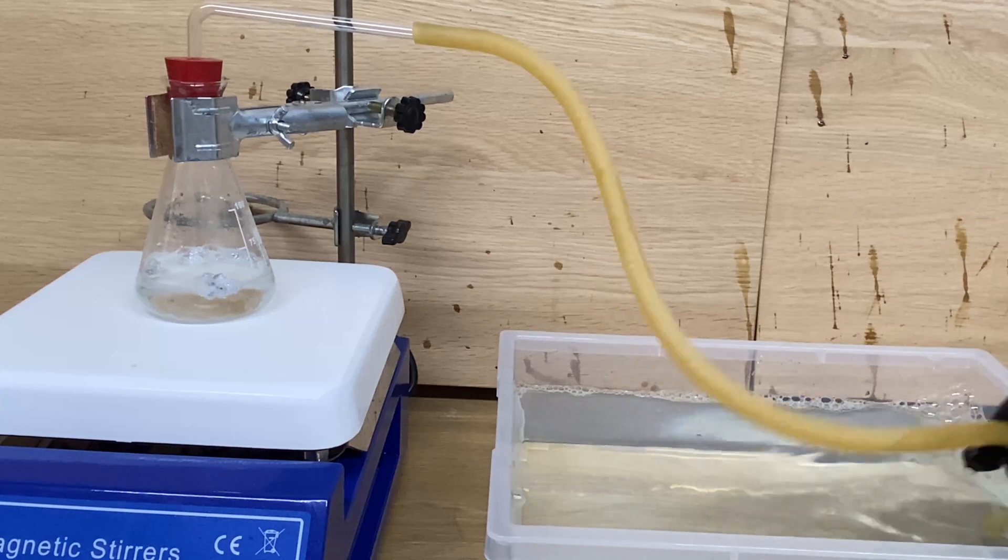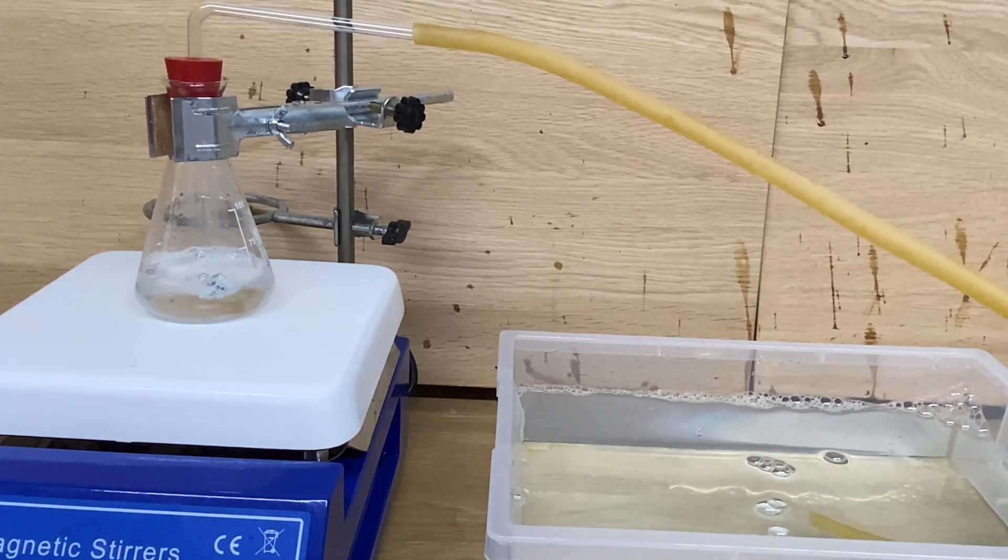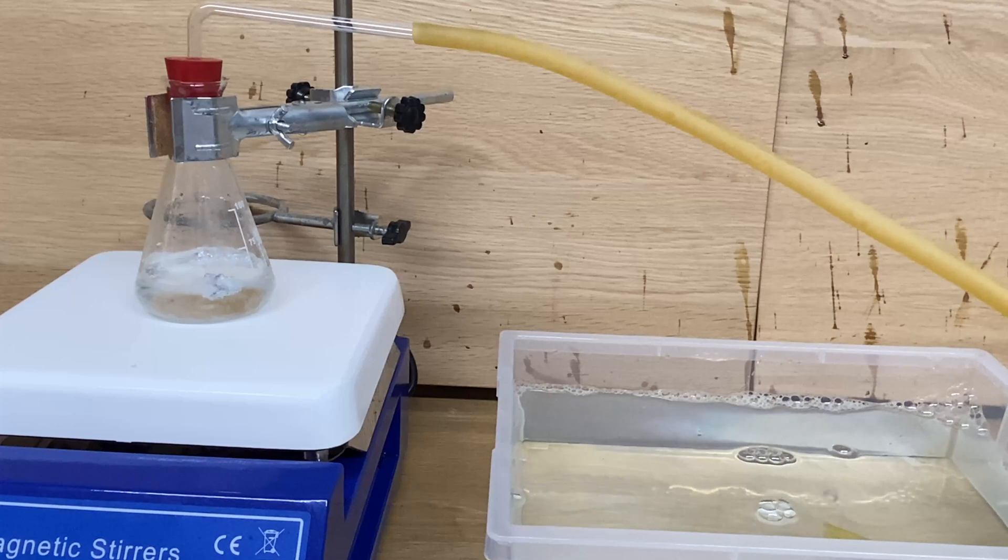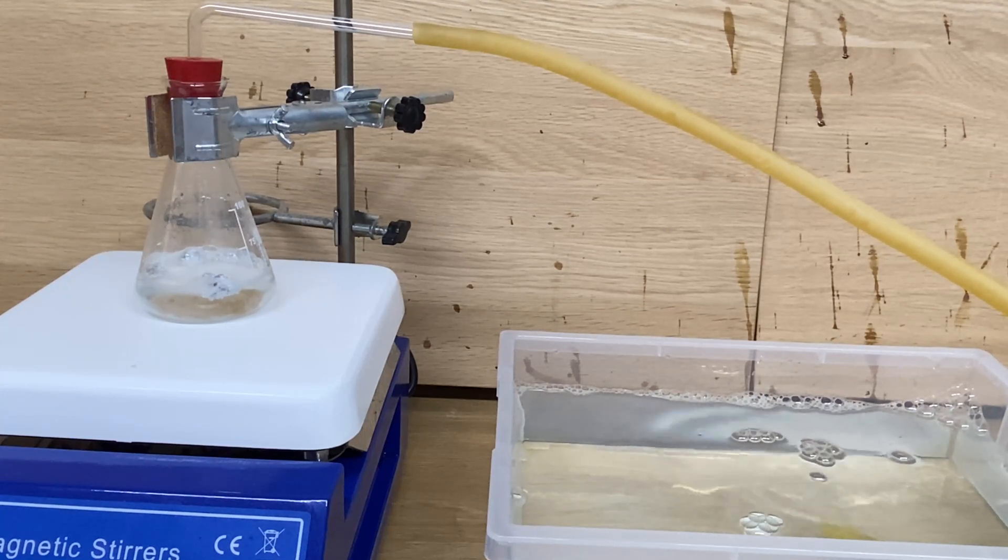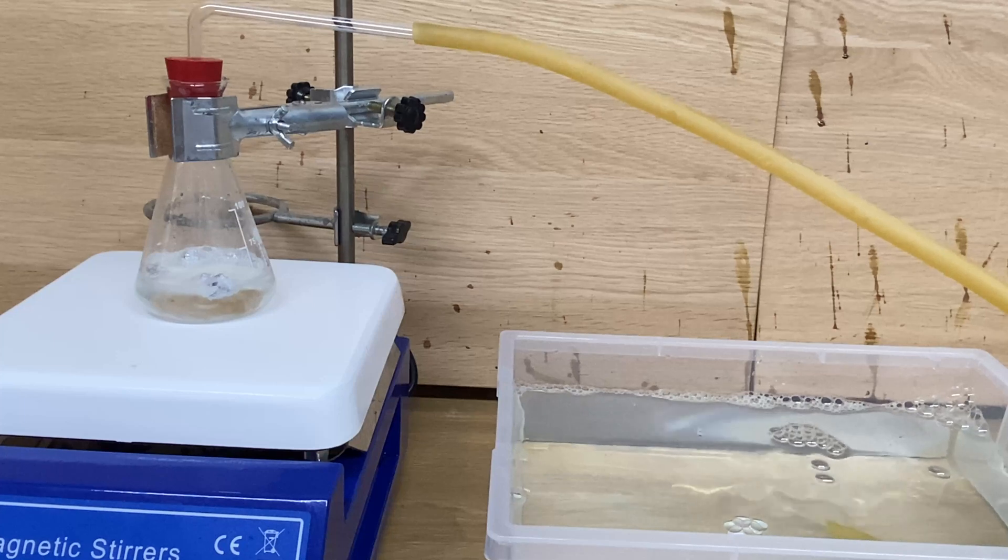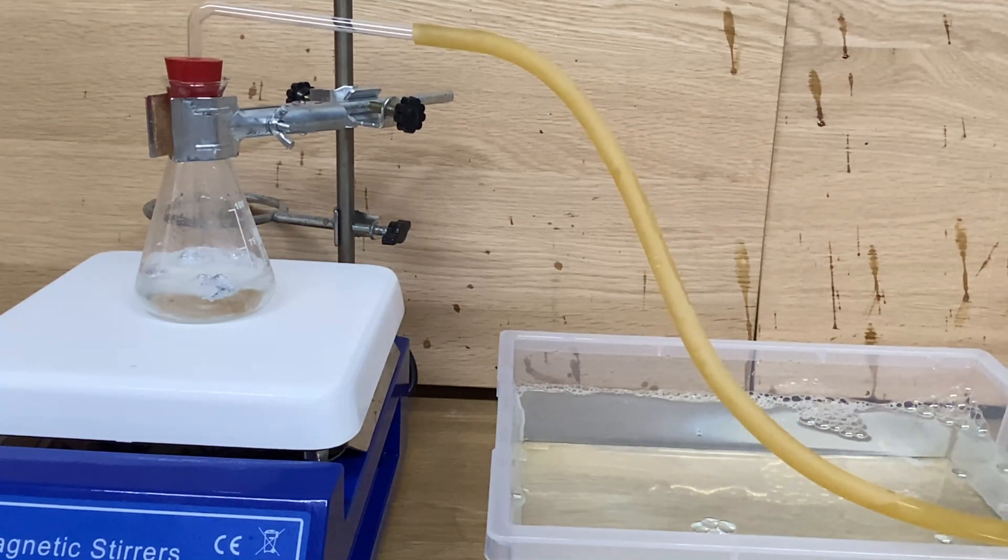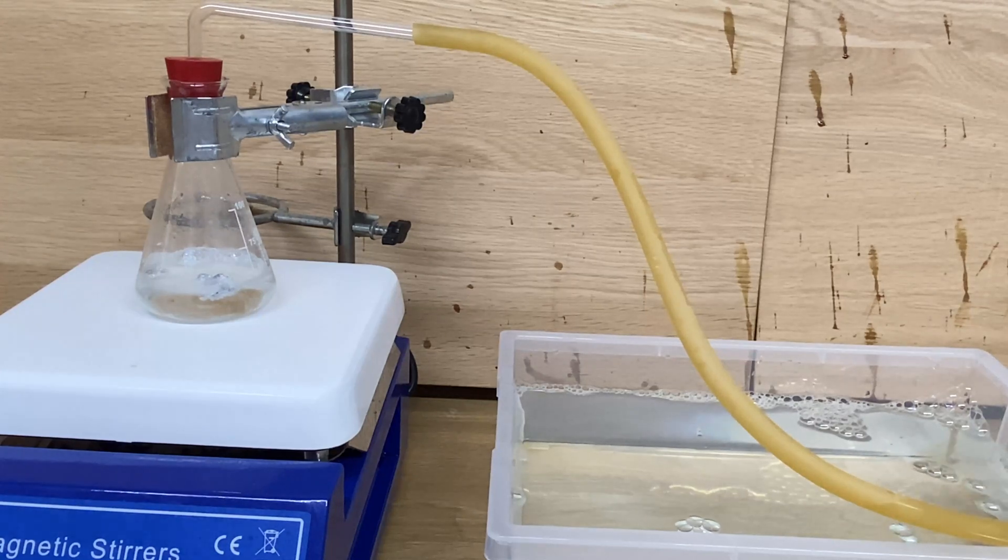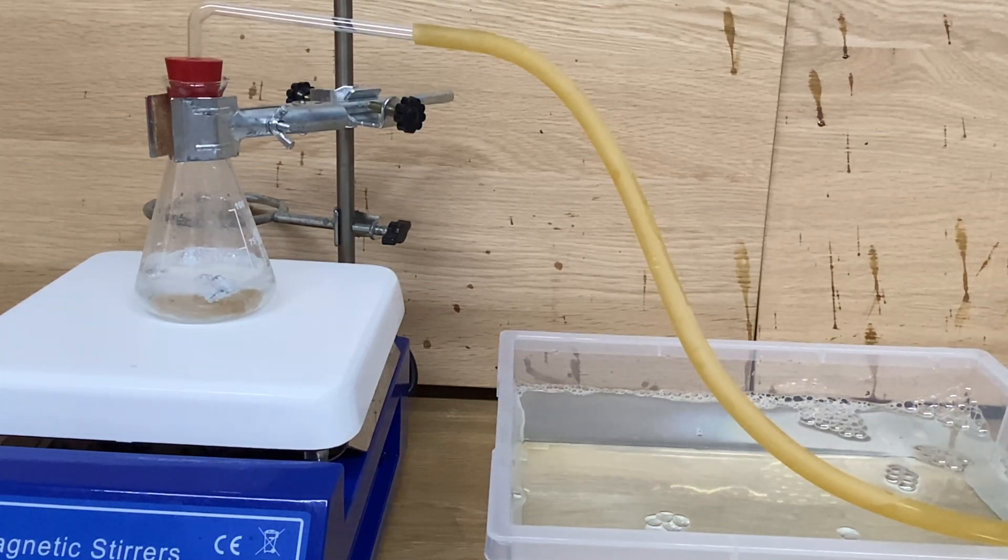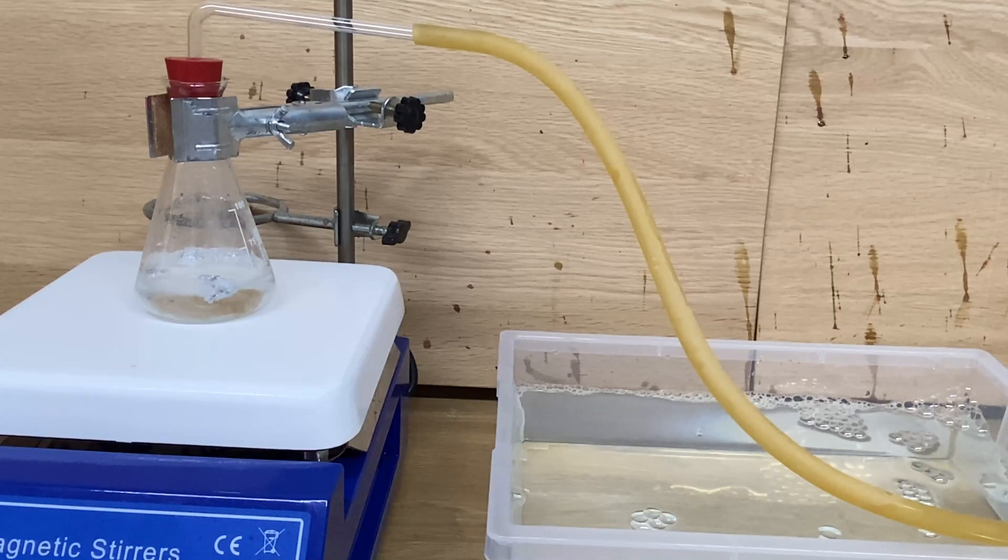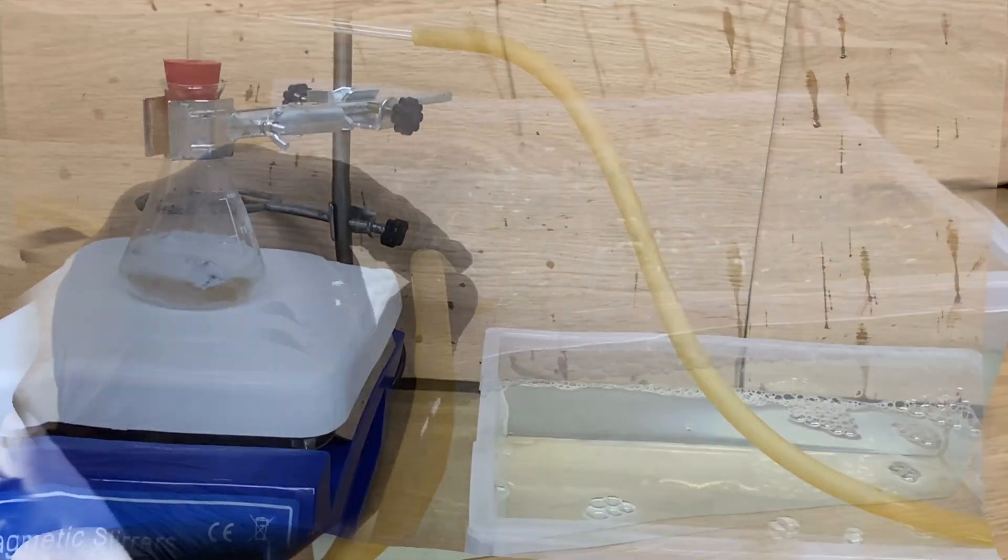In order to get a nice tub full of hydrogen filled bubbles, I now connect the Erlenmeyer flask to a rubber tube that I put in the plastic tub that I filled with tap water and soap. After all is connected, I will put in the chunks of aluminum foil that will immediately start to react. I will then seal the Erlenmeyer flask from above.